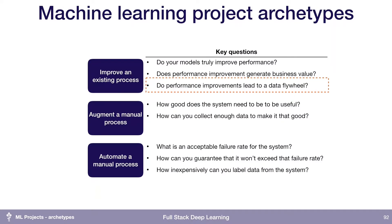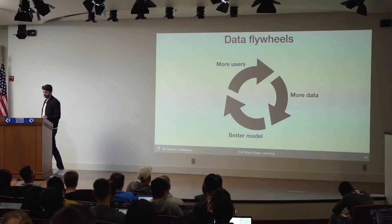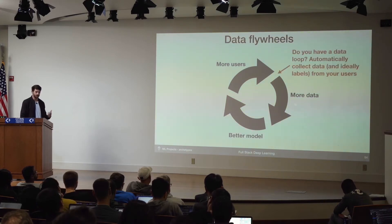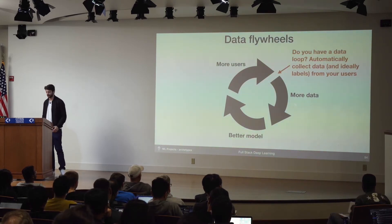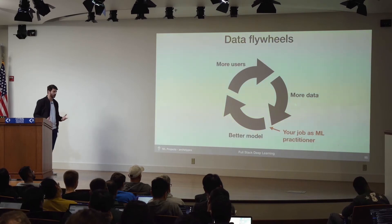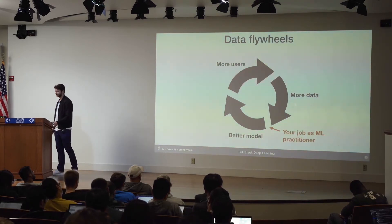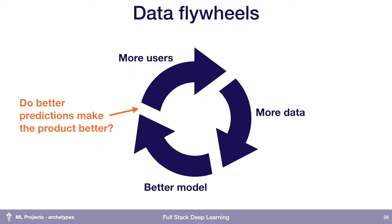Zooming in on performance improvements leading to a data flywheel: the concept is that ideally in a machine learning project, you want to be in a setting where as you collect more data, that allows you to build a better model, which then allows you to get more users and collect more data. This can break down between each step. More users generating more data comes down to whether you've built a data loop — a pipeline that automatically collects and ideally labels data from your users. More data leading to better models is your job as a machine learning practitioner. And then better model leading to more users depends on whether better predictions actually make your product better.